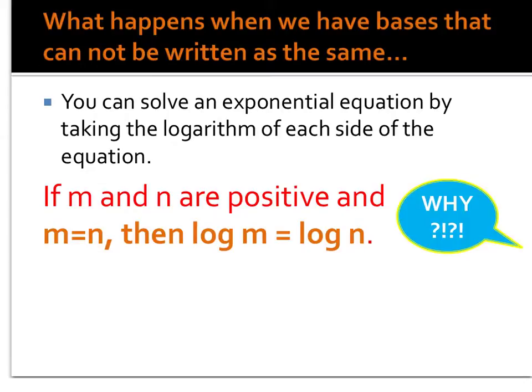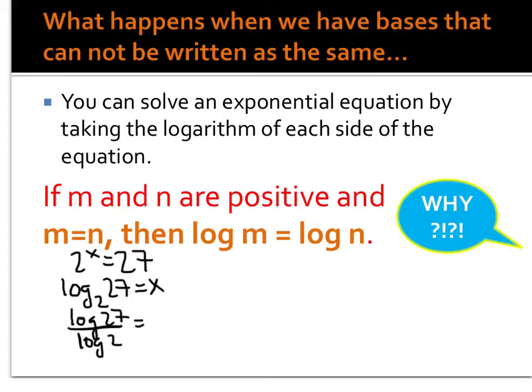So let's say I have the problem 2^x = 27. Well I can obviously not rewrite 27 with a base of 2. So switching to logarithmic form, I get log base 2 of 27 equals x. Using my change of base formula, I can rewrite the left-hand side to be log of 27 divided by log of 2, and then I can evaluate this in my calculator.